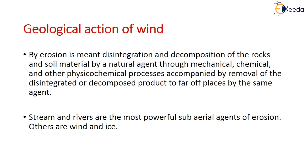First we will learn about the geological action of wind. Erosion means the disintegration and decomposition of rocks and soil material by a natural agent through mechanical, chemical, and physiochemical processes, accompanied by removal of the disintegrated material to far-off places. The top layer of disintegrated material gets washed away. Streams and rivers are the most powerful sub-aerial agents of erosion; others include wind and ice.